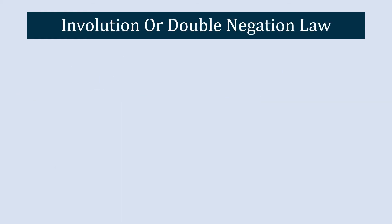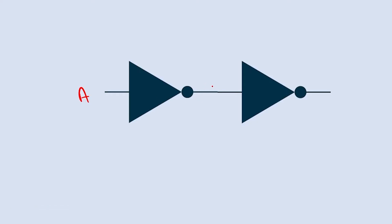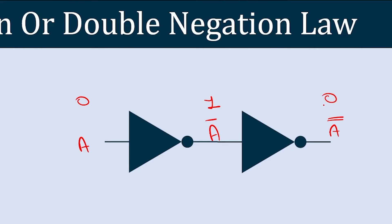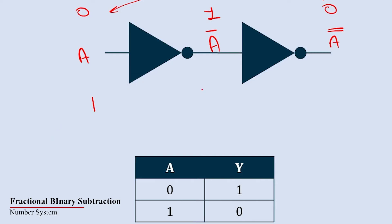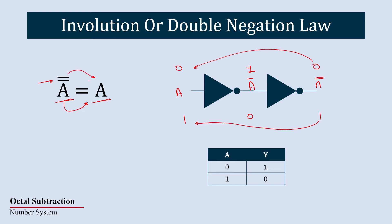The next law is the involution law, also known as the double negation law. It states that A double bar equals A. Taking a NOT gate: when A is 0, A-bar is 1, and A double-bar is 0 again — same as A. When A is 1, A-bar is 0, and A double-bar is 1 — same as A. Furthermore, any even number of bars equals A, and any odd number of bars equals A-bar.